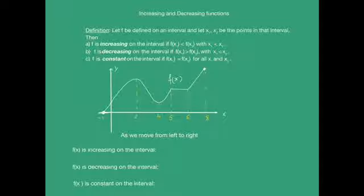f is decreasing on the interval if f of x1 is greater than f of x2 with x1 less than x2, and f is constant on the interval if f of x1 equals f of x2 for all x1 and x2.